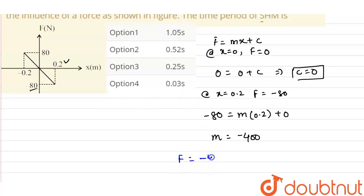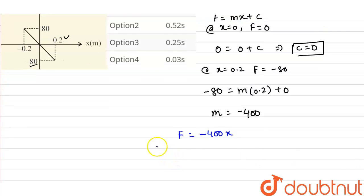So from here our slope of the line comes out as minus 400. So the equation of the line of the force becomes F equals minus 400x.